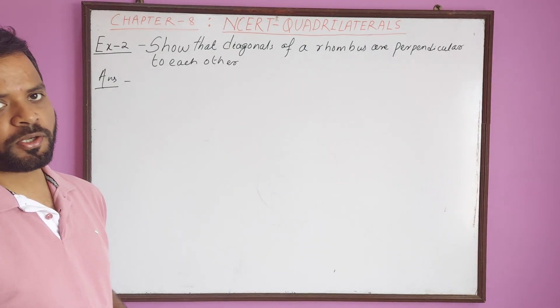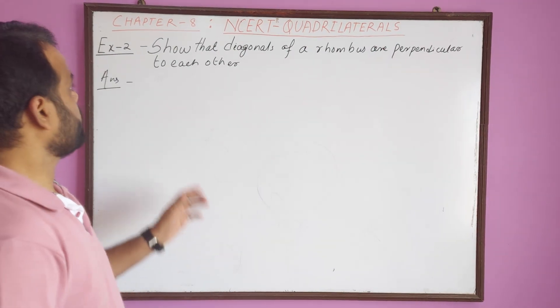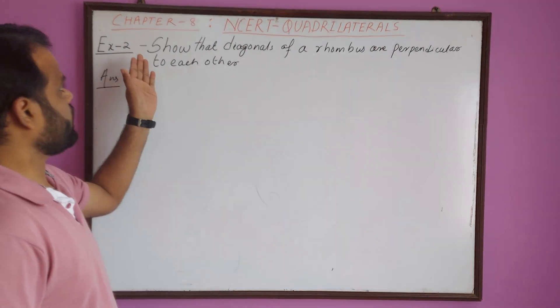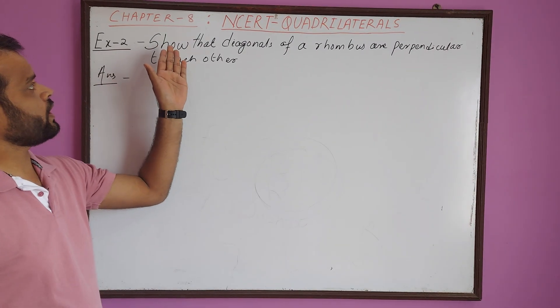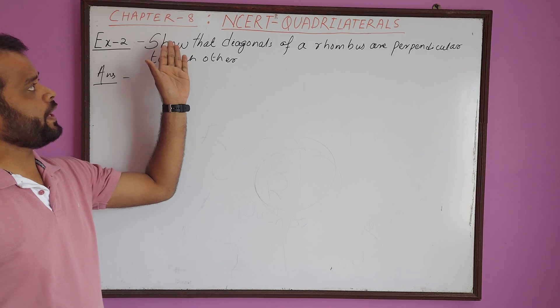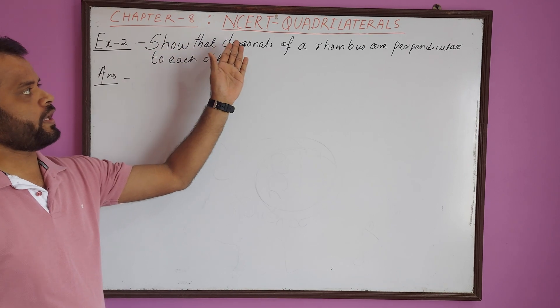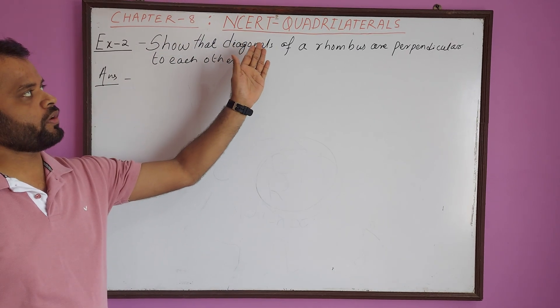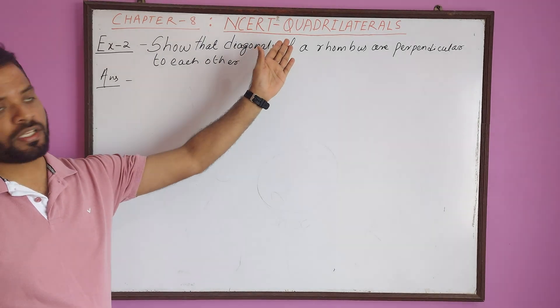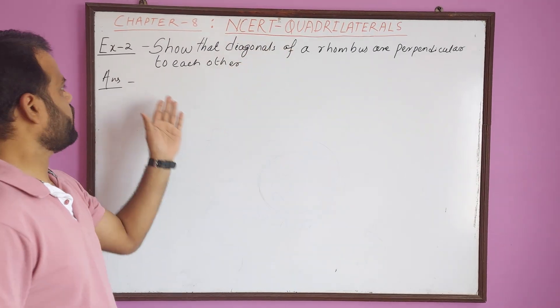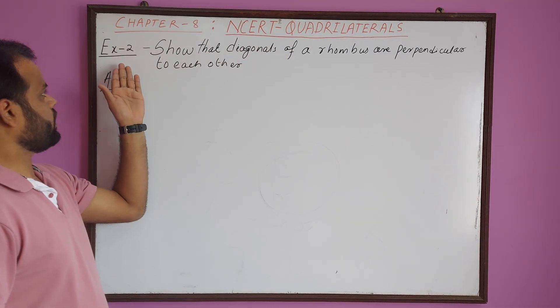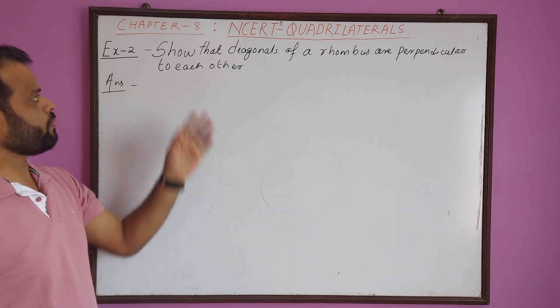My name is Vikas Singh. Welcome to my channel. We will go through chapter 8 of the NCERT textbook. It is the quadrilaterals chapter, example number 2.